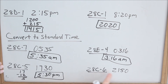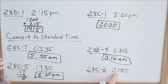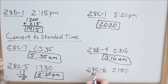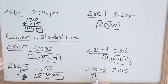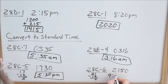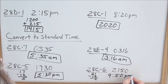Looking at 2150 — I'm in the 21st hour of the day, which means I'm afternoon, past the 12-hour noon. To figure out standard time, take your 21 and subtract 12 — how many hours past noon? 21 minus 12 is 9. So that's 9 p.m., with 50 minutes, so 9:50 p.m.